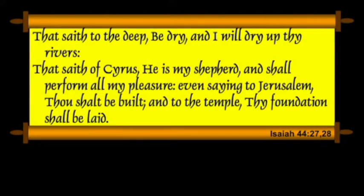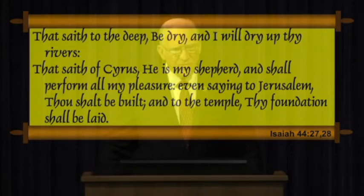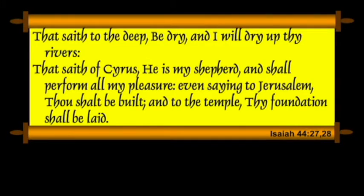In verse 28, it mentions Cyrus by name — he was hinted at earlier, and this isn't the first time a name was mentioned hundreds of years before birth. Josiah had his name mentioned 300 years before his birth, and Daniel 11 similarly. God speaks through Isaiah saying of Cyrus, 'He is my shepherd' — a strange label for the God of the universe to put on someone — 'and shall perform all my pleasure.'